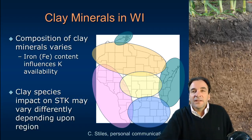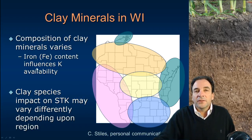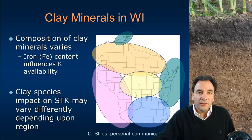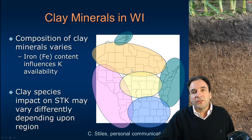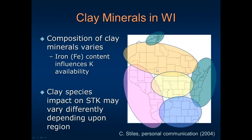The mineralogy, or the content of the clay — specifically the iron content — also has some influence on potassium content and release from soils. This diagram, prepared by a soil scientist at UW-Madison, shows generalizations of clay mineralogy across the state of Wisconsin. Clay soils have different properties across the state depending on where they're found, and one of those properties is iron content and iron oxidation state, which influences potassium availability.